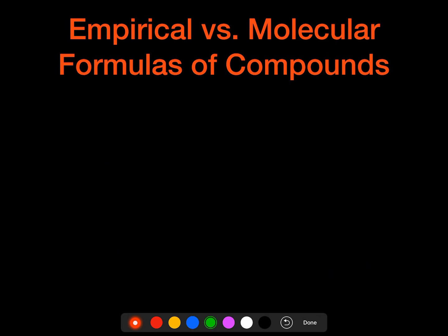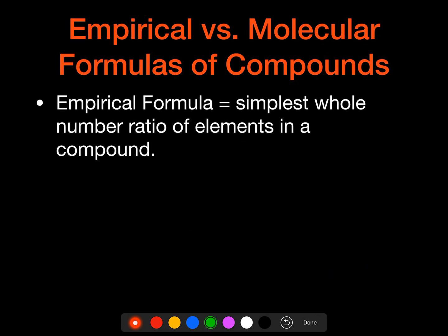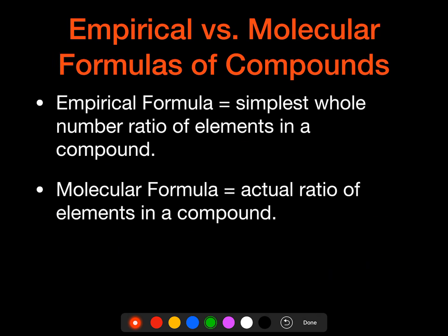So now I want to take a look at empirical versus molecular formulas for compounds. An empirical formula is the simplest whole number ratio of elements in a compound, and the molecular formula is the actual ratio of elements in a compound.